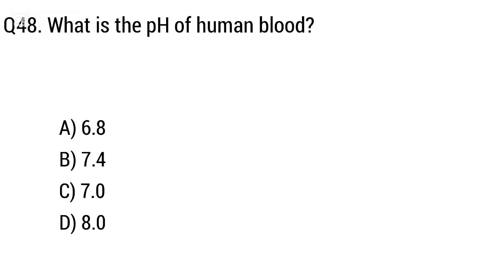Question 48: What is the pH of human blood? Option A: 6.8, B: 7.4, C: 7.0, D: 8.0. The right answer is option B, 7.4.